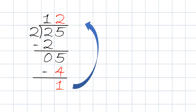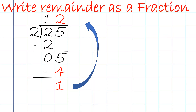12 remainder 1 is a totally acceptable answer. But sometimes your assignment may ask you to write the remainder as a fraction. So instead of writing R1, we take 1, draw the little dividing line, and 2 is the divisor — so we write the divisor underneath as the denominator. So the answer is 12 and a half.